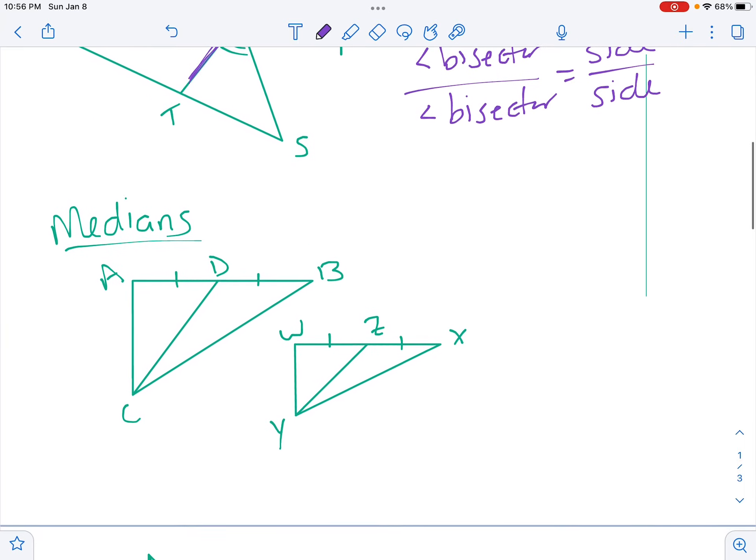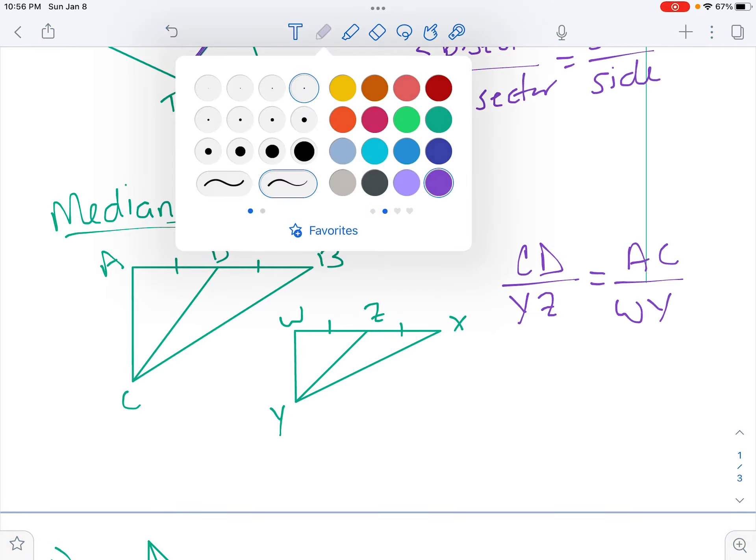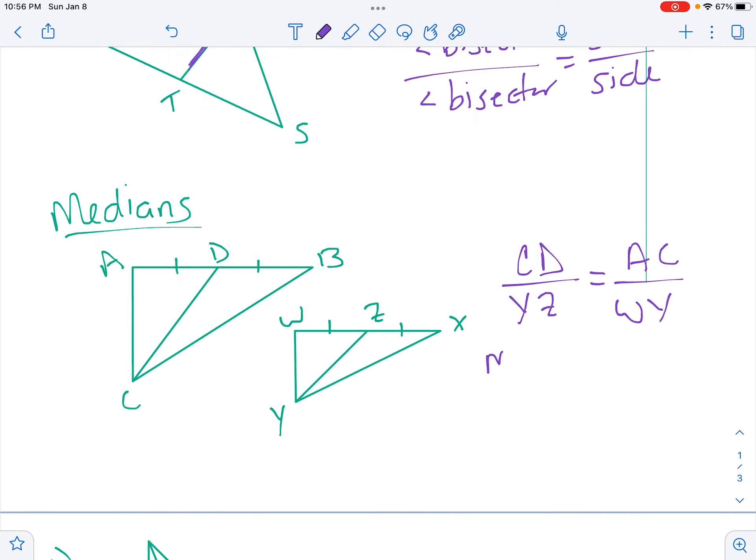The next special segment we have are medians, and it works the exact same way. If we have two similar triangles, we could say CD over YZ equals AC over WY, which is really median over median equals side over side. So you're setting up more proportions, and then we would cross multiply.